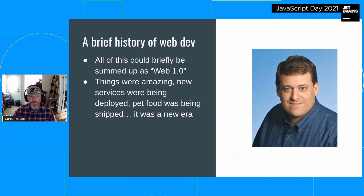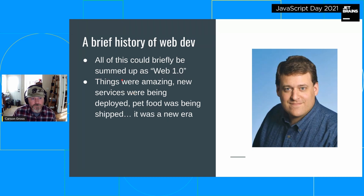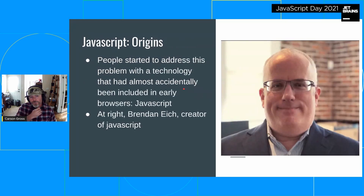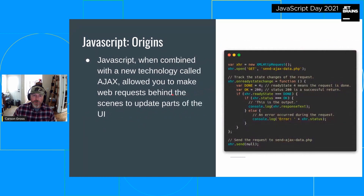That can all be briefly summed up as Web 1.0. Things were great — we were delivering pet food, which they're actually trying to do again — and it was an amazing time. But there was one problem: the UIs were pretty terrible. This is what Amazon looked like back in the day. To address these terrible UIs, people started working with a technology almost accidentally included in early browsers — JavaScript, created by Brendan Eich — combined with a new technology called AJAX, which allowed making web requests to a back end out of band, not through normal links and forms.